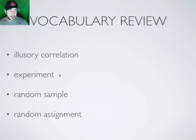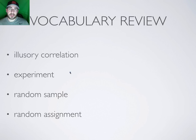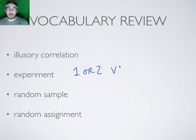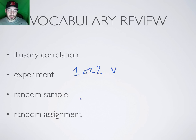An experiment is a research method where we have an independent and dependent variable and control for extraneous factors. We look at one or two variables and try to infer causation. To do that, we use random sampling and random assignment. We try to control for everything else and see if there is a causal relationship.